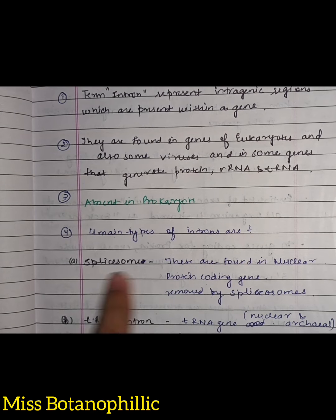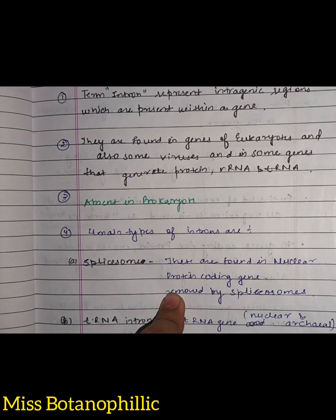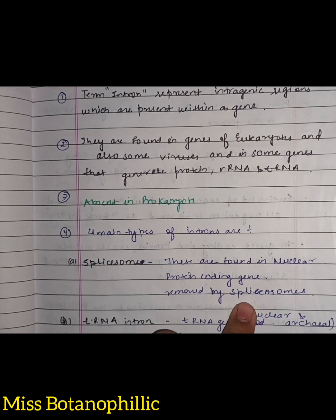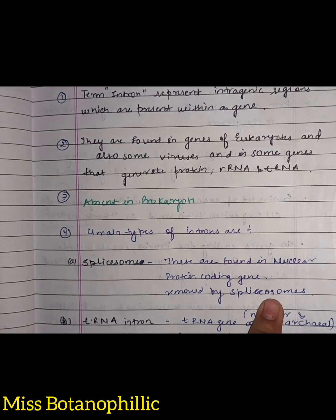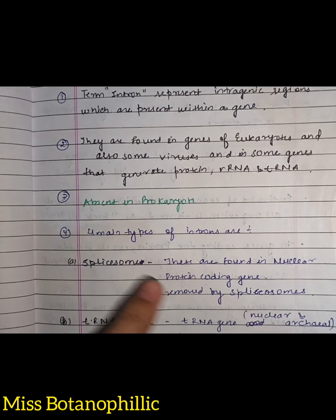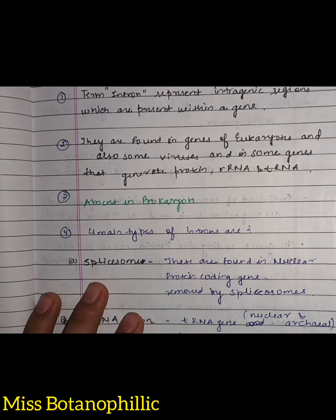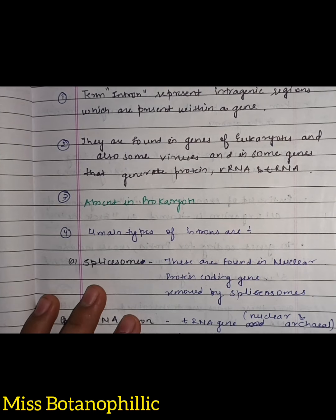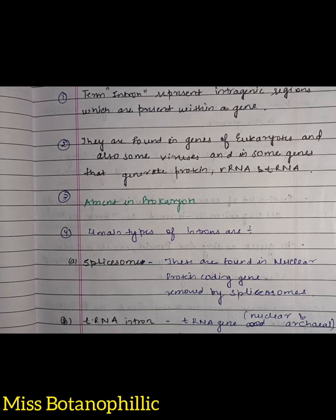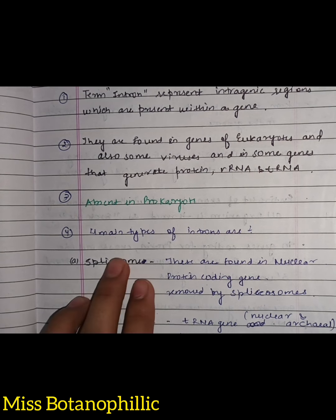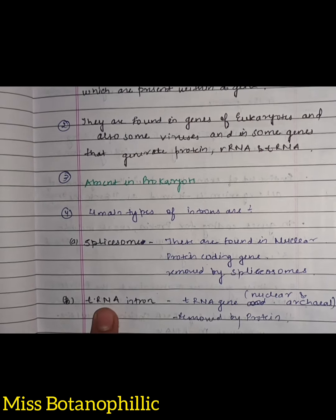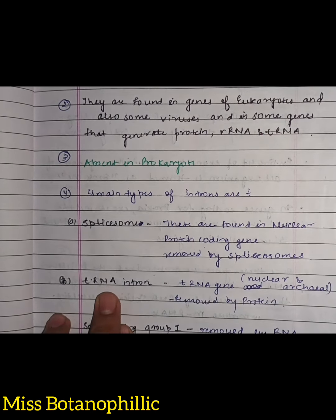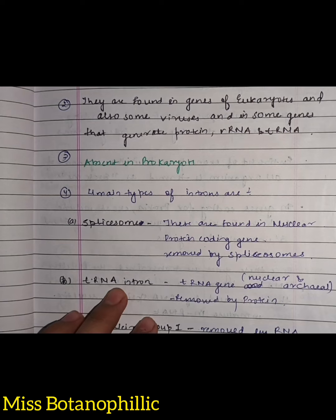How can we remove this type of intron? We can splice through this type. We need to know the location of introns and the splicing techniques to remove them. Next, we have the tRNA introns.